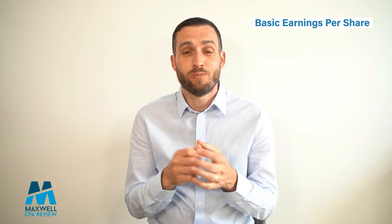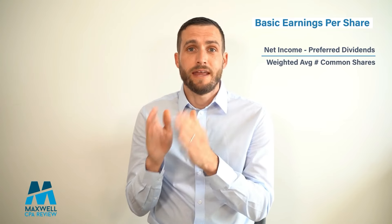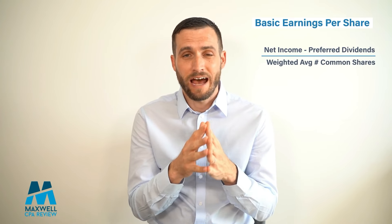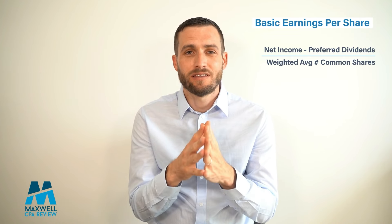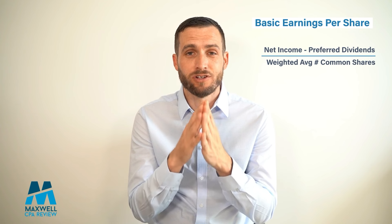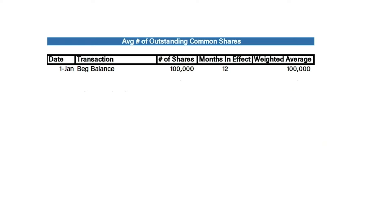The next important formula is basic earnings per share: net income minus preferred dividends, divided by the weighted average common shares. To calculate the weighted average shares: a beginning balance of 100,000 shares counts for 12 out of 12 months, so we count the full 100,000. If we issue 50,000 shares on July 1st, we count only 6 out of 12 months, giving 25,000.